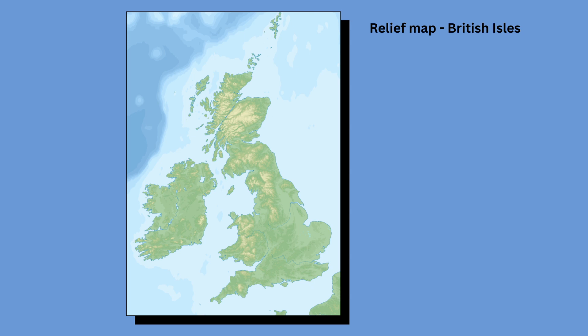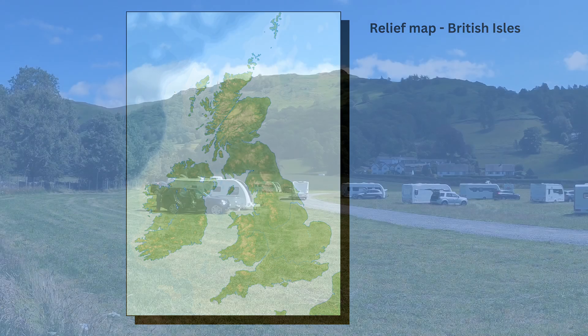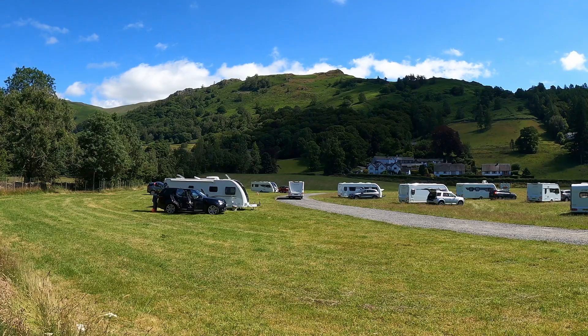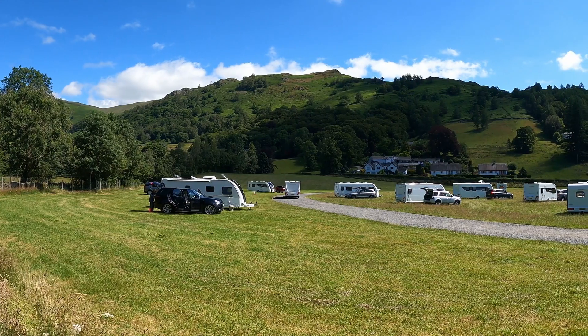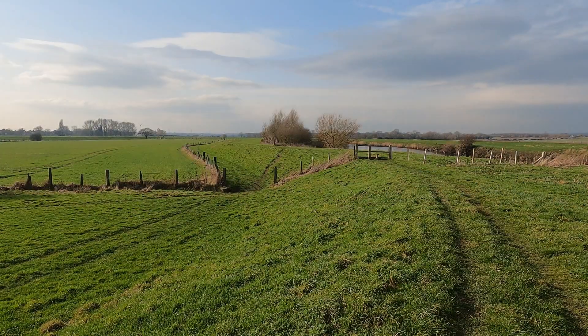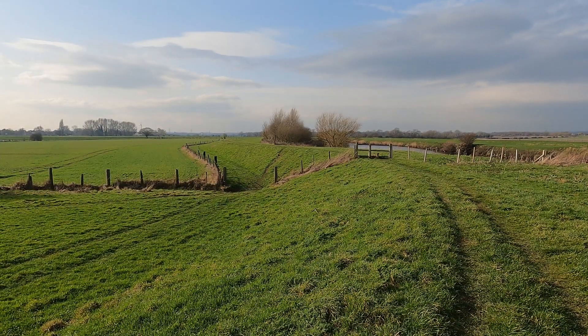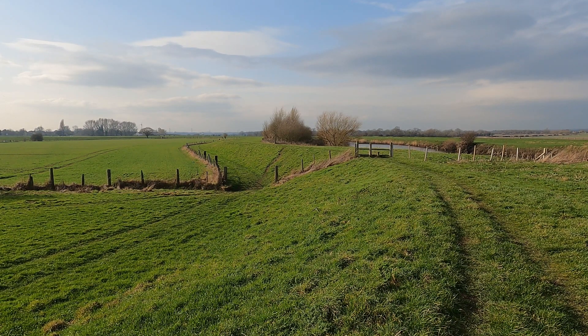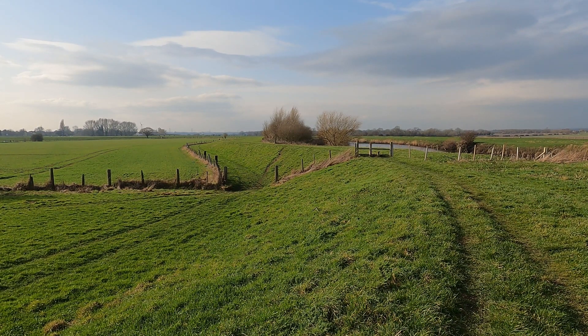In this example, light brown colours indicate where the upland regions of the British Isles are located. Green colours indicate lowland areas. Upland areas are high above sea level; they are often, but not always, mountainous. Lowland areas are not very high above sea level, and they are often flat.